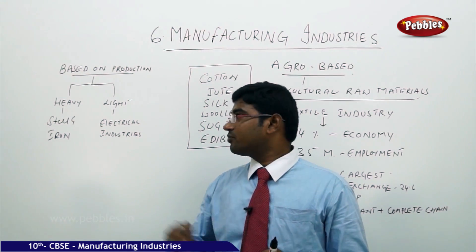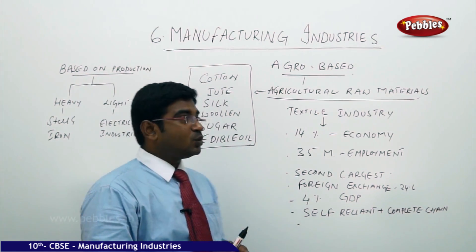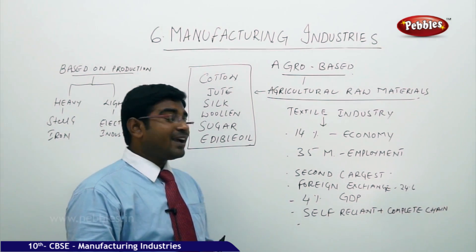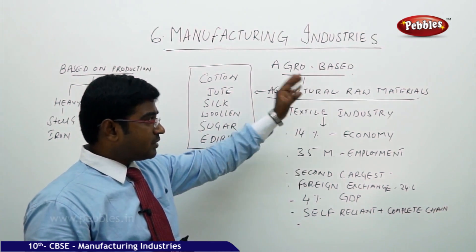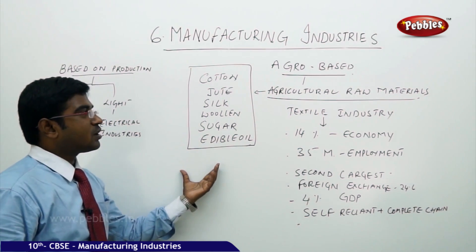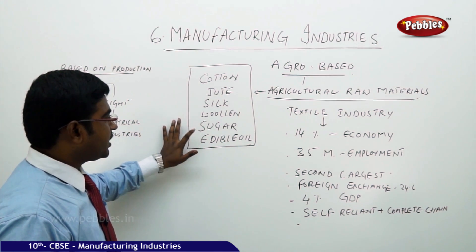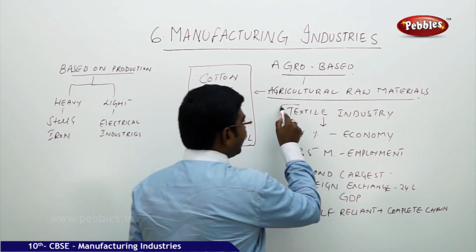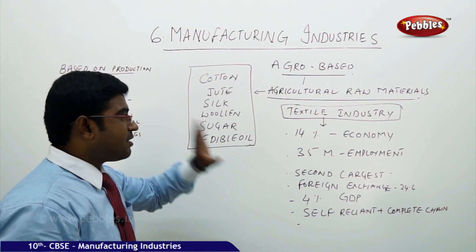The other category is light industry — all electrical equipment we use comes under the category of light industry. Moving on from the categories of industries, let us understand what an agro-based industry is. An agro-based industry is one that derives its raw materials from agriculture. Examples include cotton industry, jute industry, silk industry, woolen industry, sugar industry, and edible oil industry. Among all these, the textile industry holds a significant place in the Indian context.